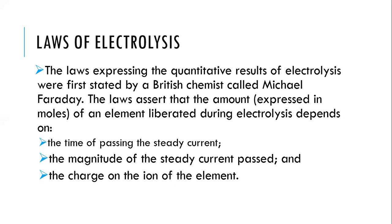The first factor is the time of passing the steady current — the time expressed in seconds used to pass the amount of current from one electrode to another. The second is the magnitude of the steady current — the amount expressed in numbers that the current is passed from one electrode to another. The third is the charge on the ion of an element, meaning the charge liberated during the passing of the electric current.